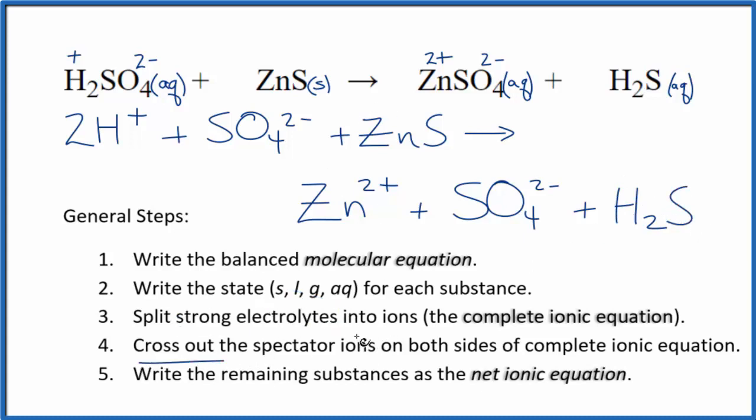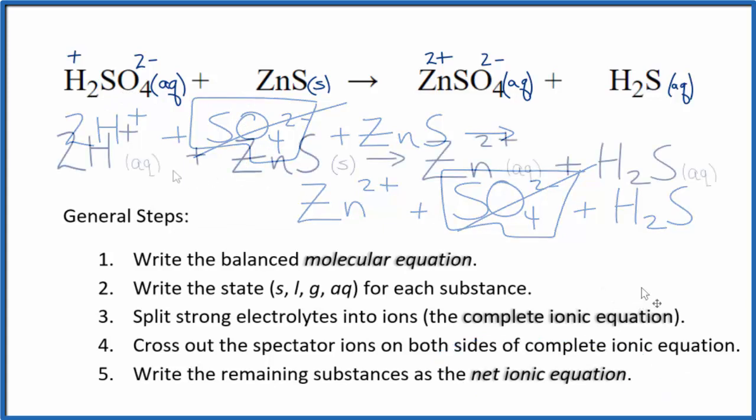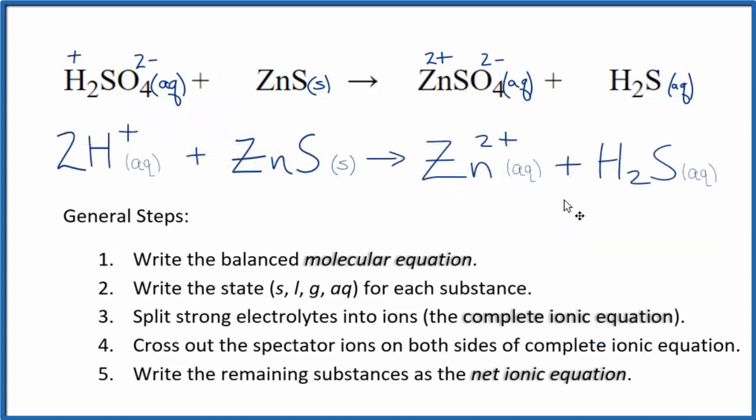Now we can cross out the spectator ions. They're on both sides of the complete ionic equation. The only thing that's the same in the reactants and the products, that's this sulfate ion here. So that's a spectator ion and we can cross it out. Everything else is unique. So this is the net ionic equation for H2SO4 plus ZnS. I'll clean it up and write the states. This is the balanced net ionic equation for sulfuric acid plus zinc sulfide.